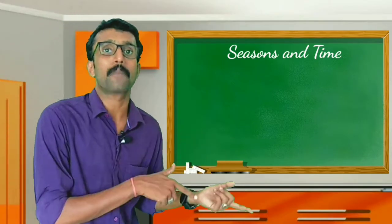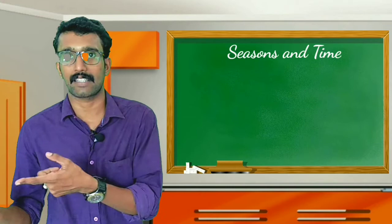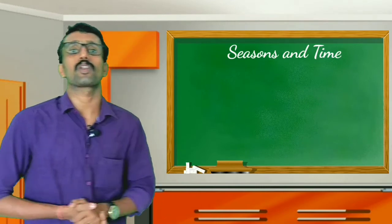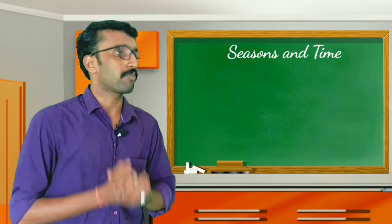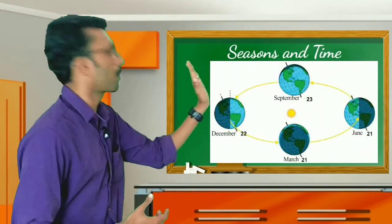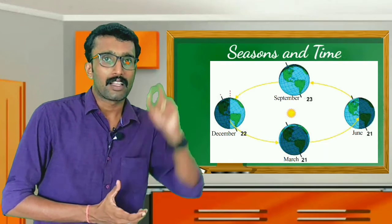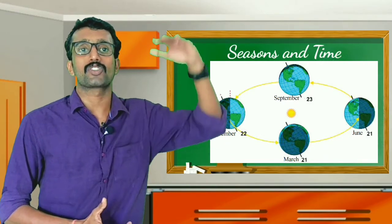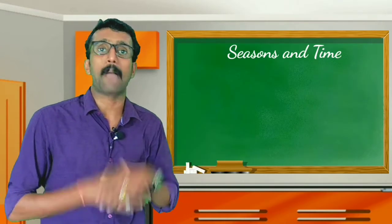We need to learn how this parallelism influences the variations of sunlight. To connect that point, we need to learn one more thing: the apparent movement of the sun. The apparent movement of the sun means the Earth is maintaining its parallelism throughout the revolution. Due to that, the sun is apparently shifting in between the Tropic of Cancer and Tropic of Capricorn. That movement of the sun is known as the apparent movement of the sun.